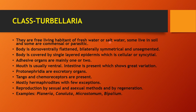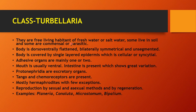They are also found on land and can be commensal. A commensal relationship means we are dependent on the other organism for food without harming it. So Class Turbellaria is mostly non-parasitic and free-living. Okay?